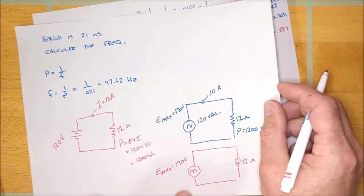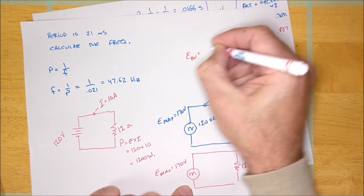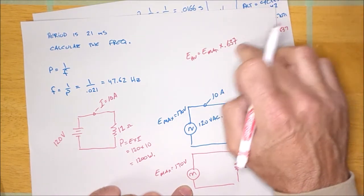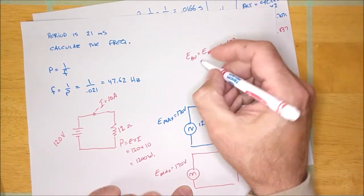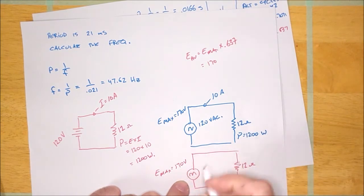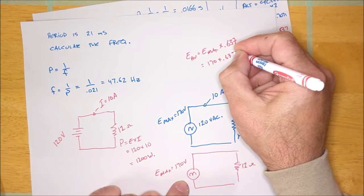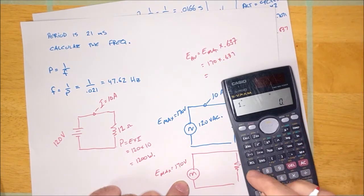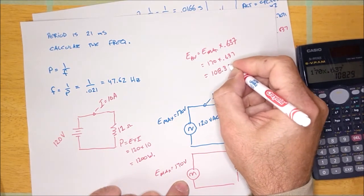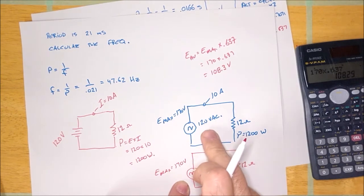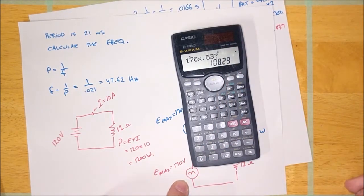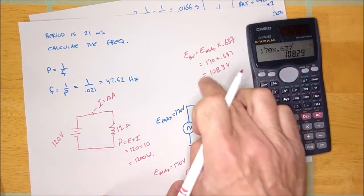What is the DC voltage here? You can calculate it using the formula: E average is equal to E max times 0.637. The textbook says 0.636 — same thing, don't sweat it. Let's calculate the average voltage: 170 times 0.637 equals 108.3 volts. What that means is if I take this AC voltage, 120 volts, run it through a full wave bridge rectifier, then measure it with a DC meter, it's going to be 108 volts DC. And that's what the average voltage is.